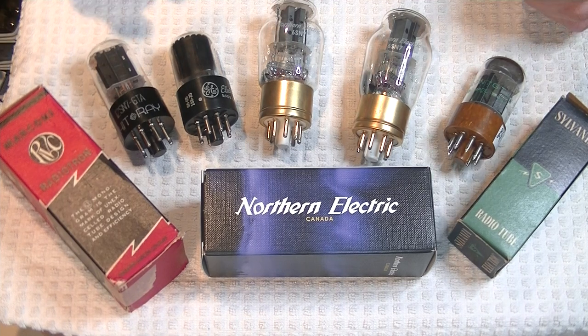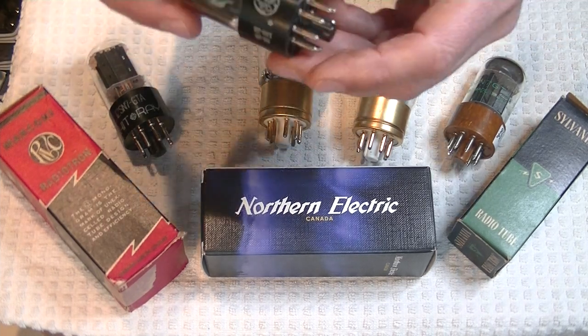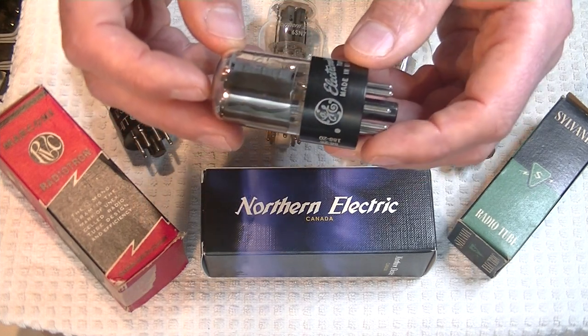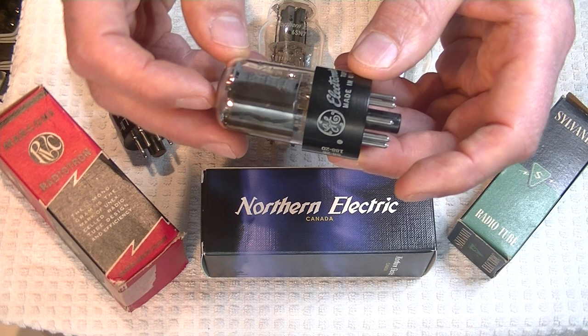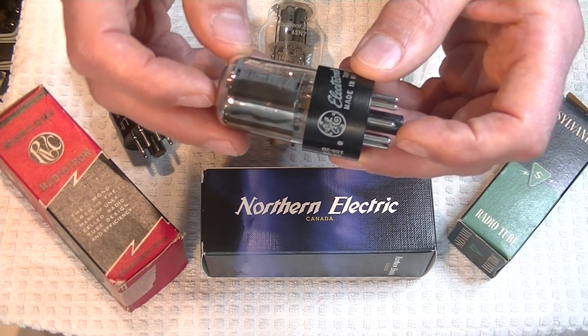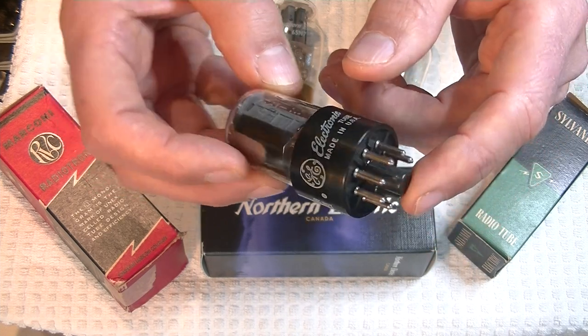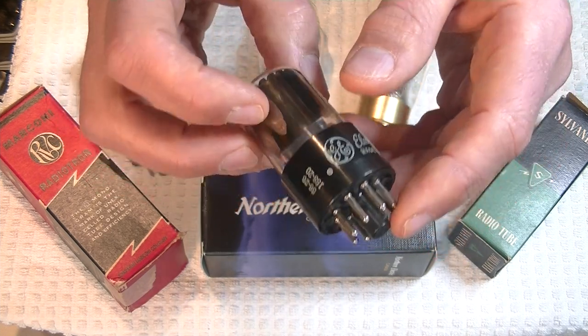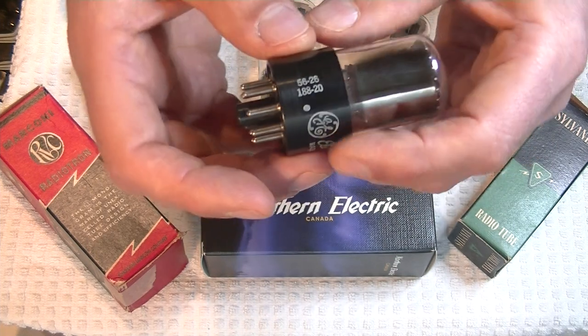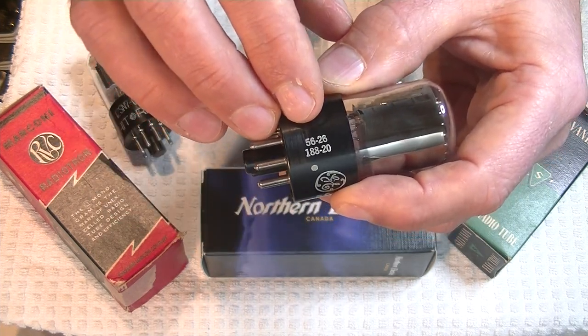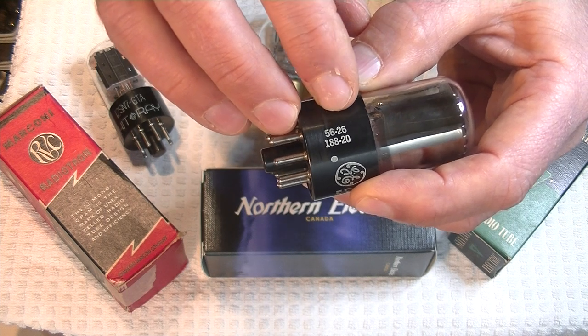Next, there's a GE 6SN7 GT-A or B. In this case, we're looking at the GT-B version, but the GT-A is virtually the same tube. Let's have a quick look at it. Again, the lettering is really nice. The pins are perfect. It's another new old stock tube. And with good print, we've got a great date code. Number 56, so 1956, the 26th week. Number 188 is the manufacturing code for GE.